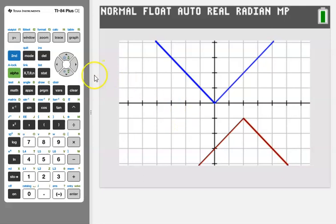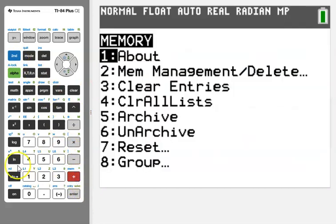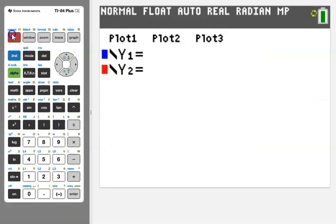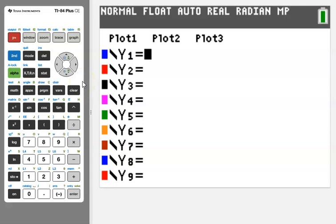First we want to clear my memory: 2nd plus 7, 1, 2. I will go to the y equals and put in our parent function, which is x squared, so type x followed by squared.